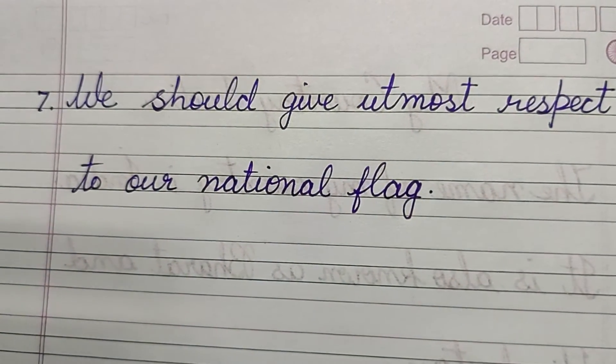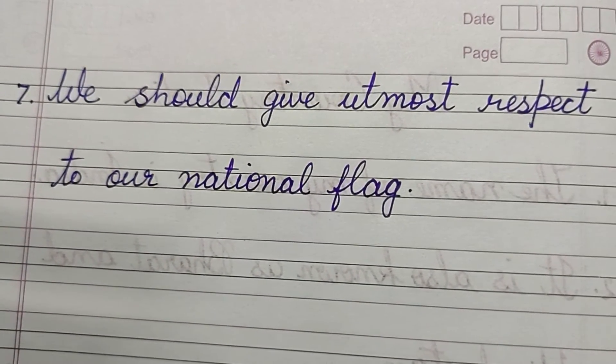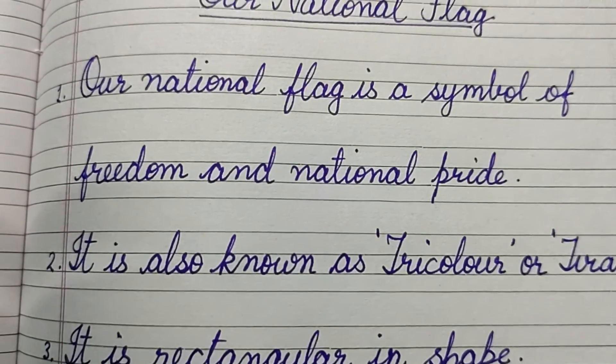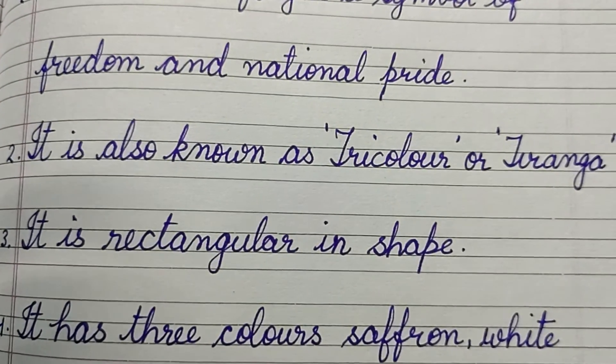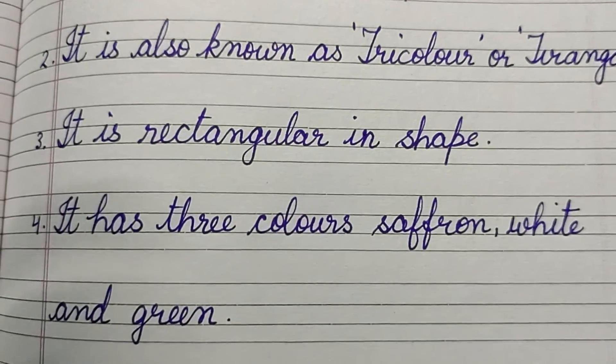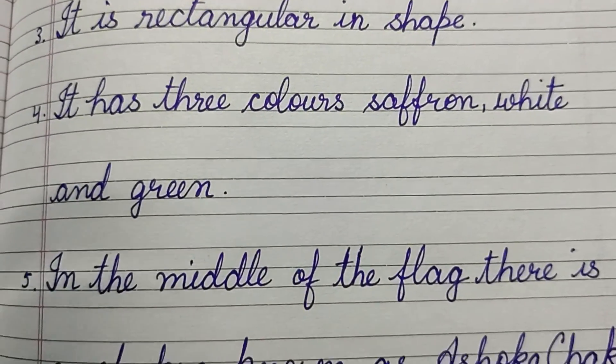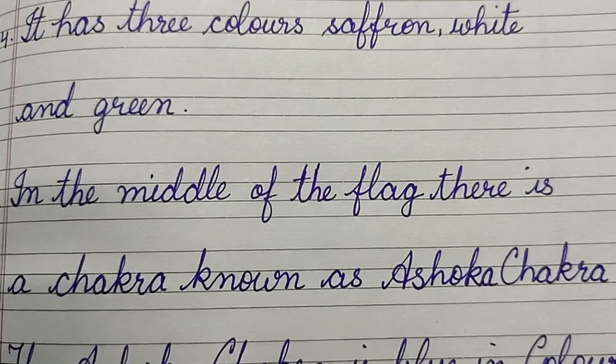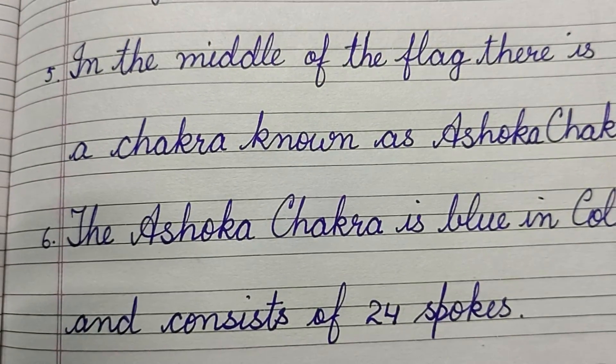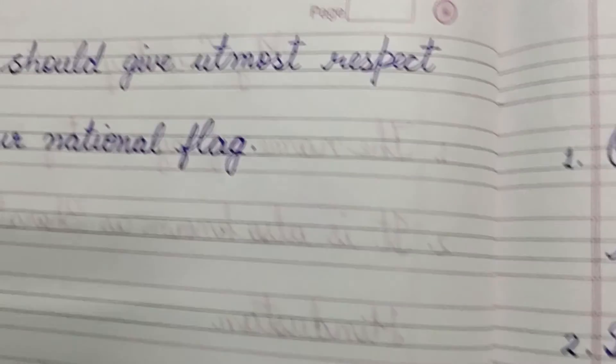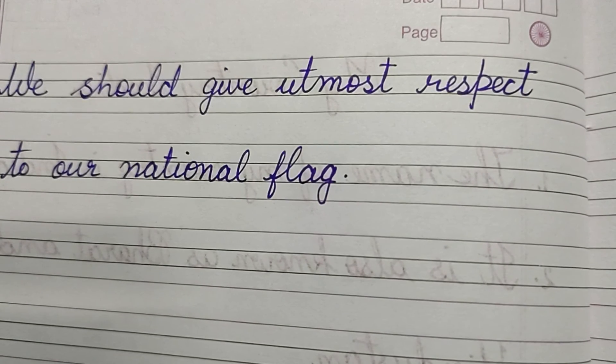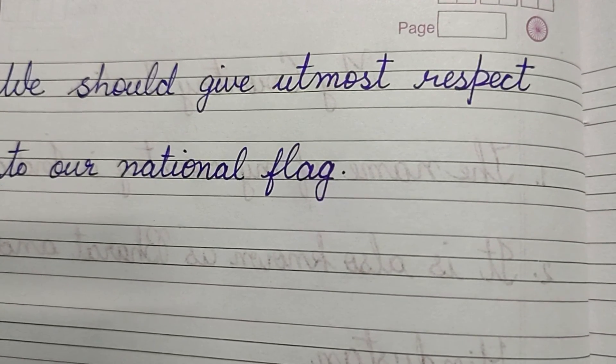Okay, so here is the essay on our national flag. Our national flag is a symbol of freedom and national pride. It is also known as tricolor or tiranga. It is rectangular in shape. It has three colors - saffron, white, and green. In the middle of the flag there is a chakra known as Ashok Chakra. The Ashok Chakra is blue in color and consists of 24 spokes. We should give utmost respect to our national flag. So in our next video we'll meet with another interesting topic. Till then, bye bye.